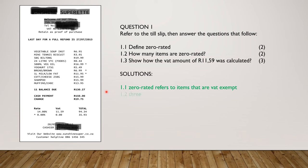How many items are zero rated? I've got veg oil, I've got bread, and I've got milk. Three items.